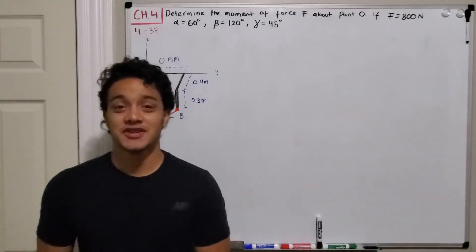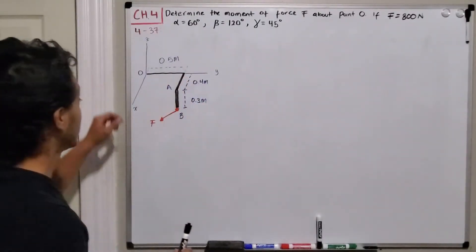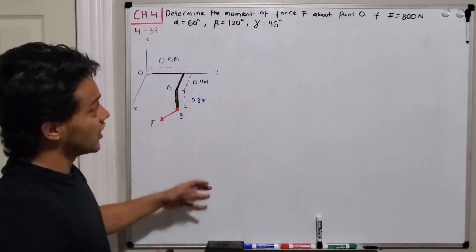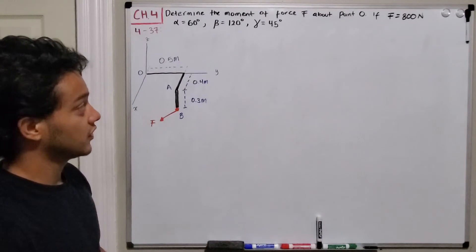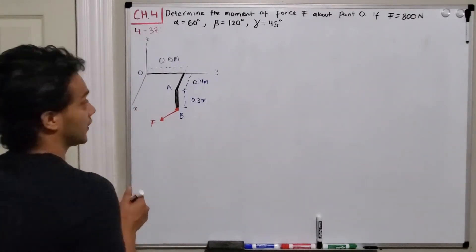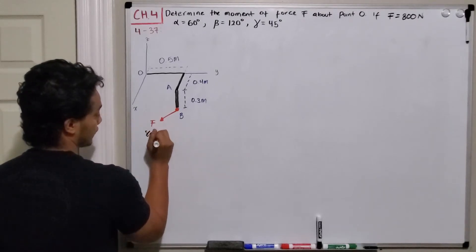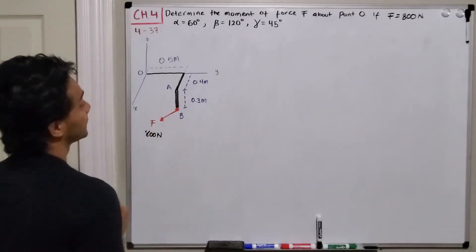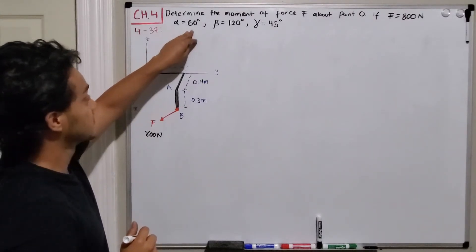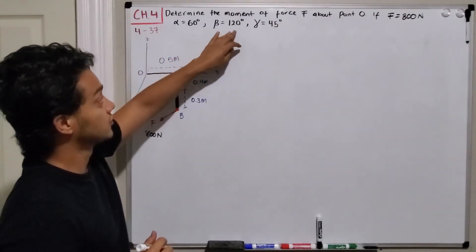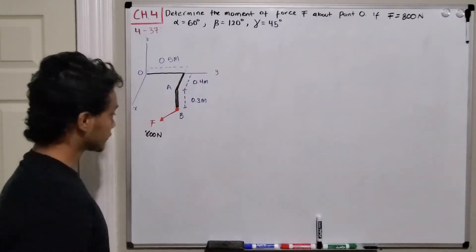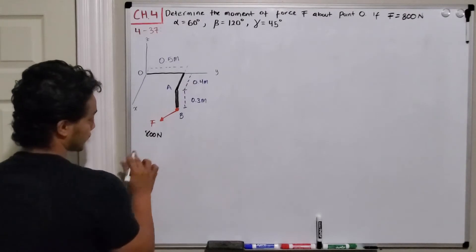Welcome back everyone to Learning by Teaching. We're in statics and now we're going to do problem 4.37 — to determine the moment of force F about point O. F has a magnitude of 800 Newtons, and they're giving us the direction angles: alpha is 60 degrees, beta is 120 degrees, and gamma is 45 degrees. With these angles we can decompose our force F.